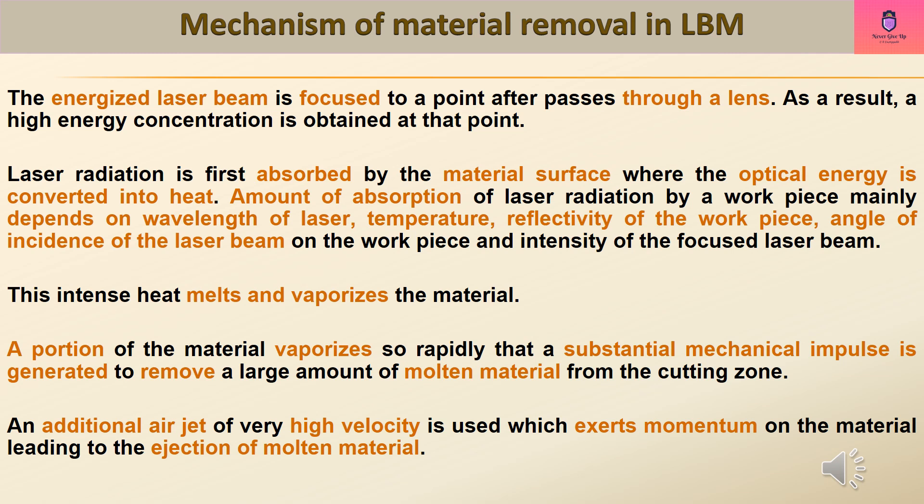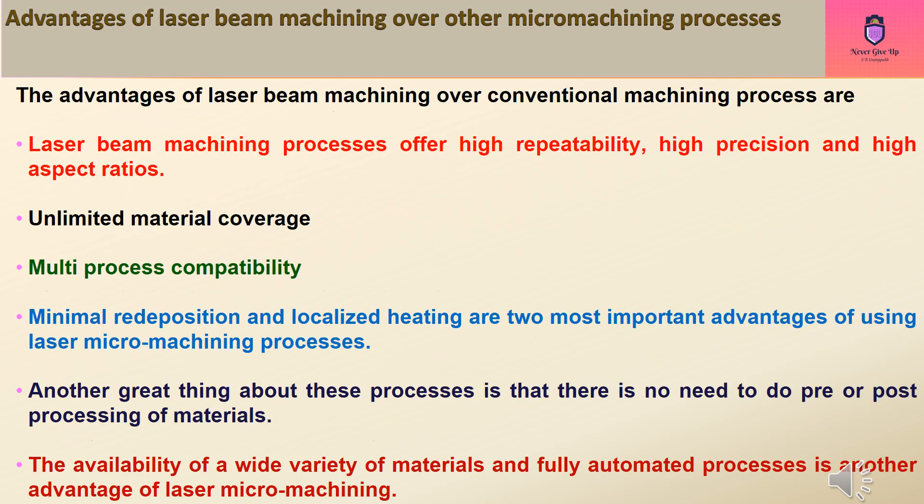This intense heat melts and vaporizes the material. A portion of the material vaporizes so rapidly that a substantial mechanical impulse is generated to remove a large amount of molten material from the cutting zone. An additional air jet of very high velocity is used which exerts momentum on the material leading to the ejection of molten material.